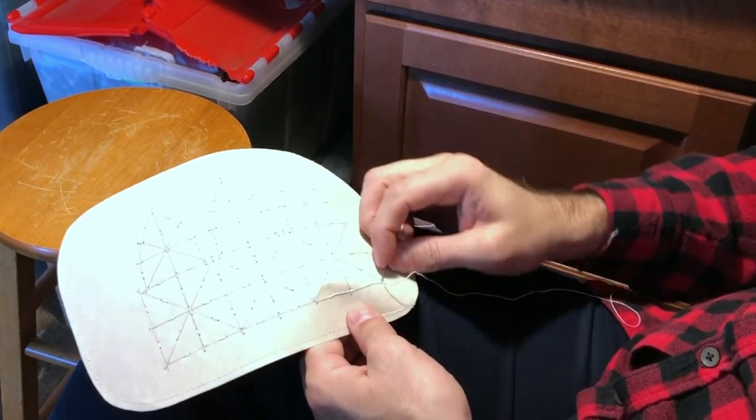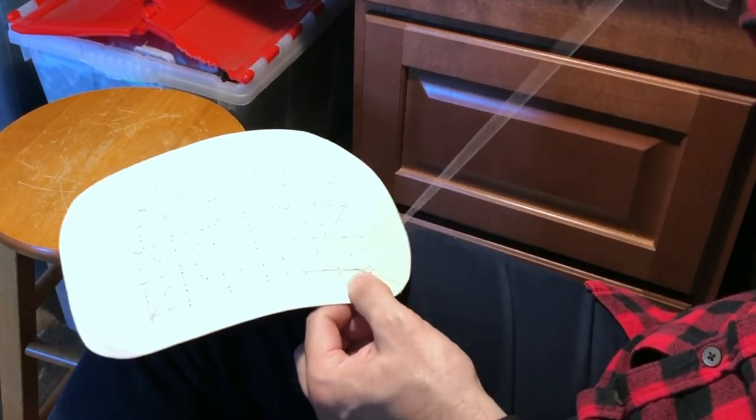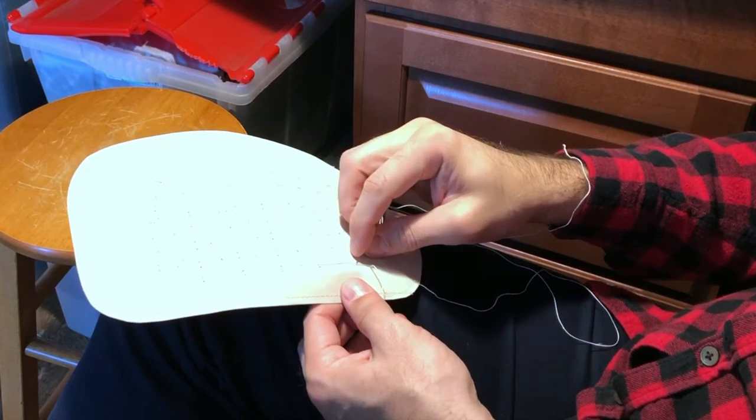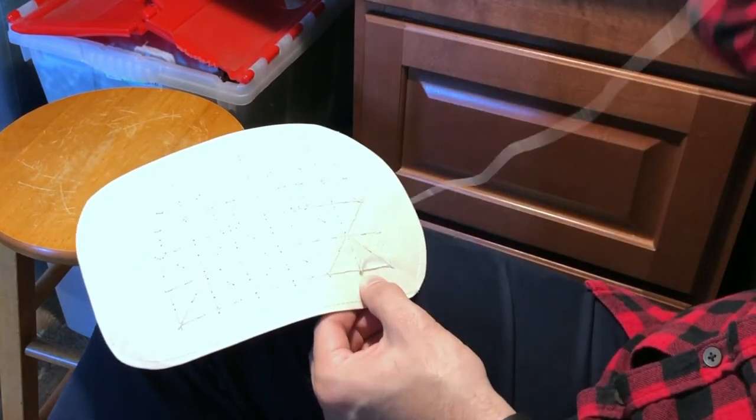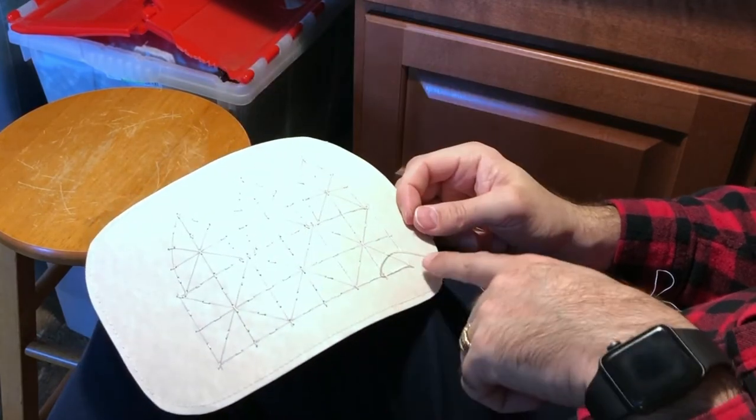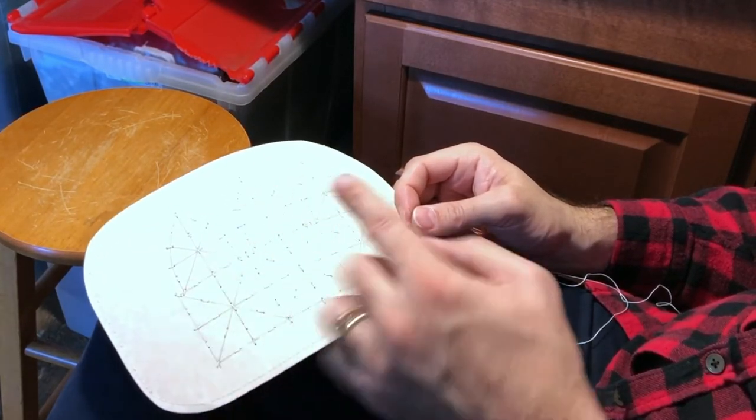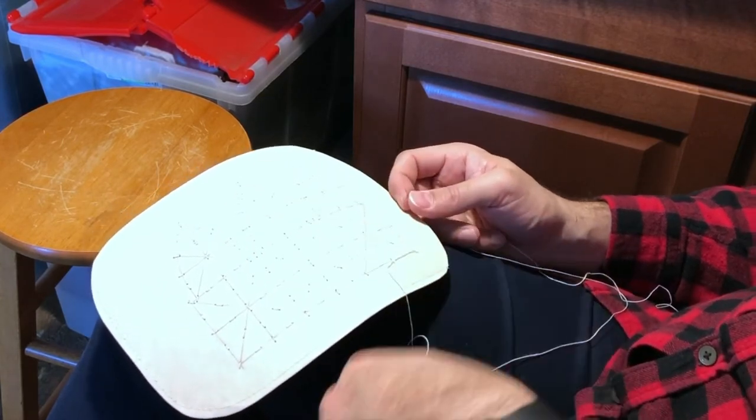And then I'm back at the beginning now. I've run all the way around, and I'm going to keep going. Generally, when you're setting up the framework itself, you want at least two passes under all of this, so that there's two lines of the linen thread underneath everything.